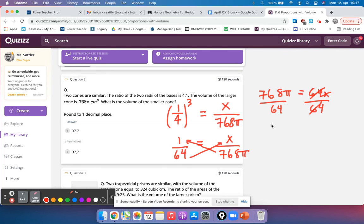I can go to my calculator now. So 768 pi divided by 64 and we get 37.699. So if we round to one decimal place, that would be 37.7.